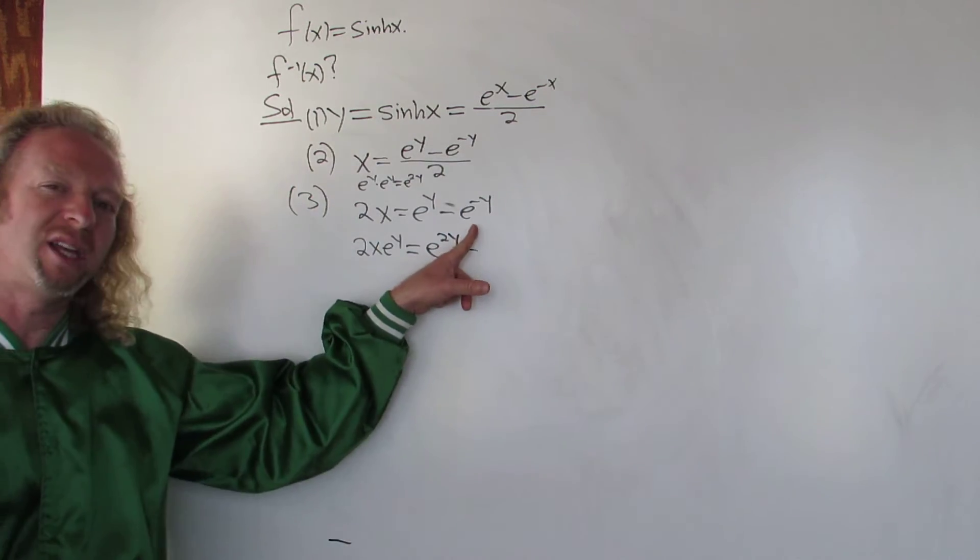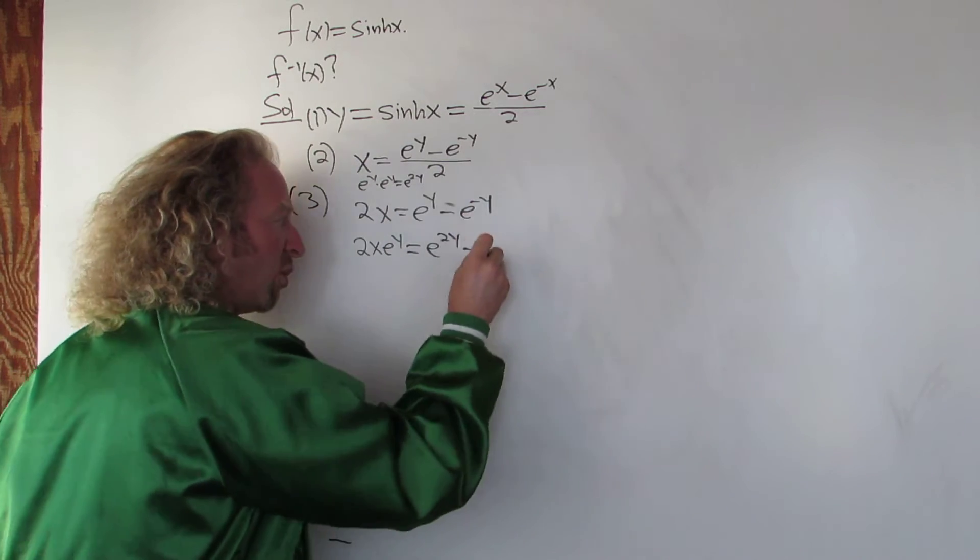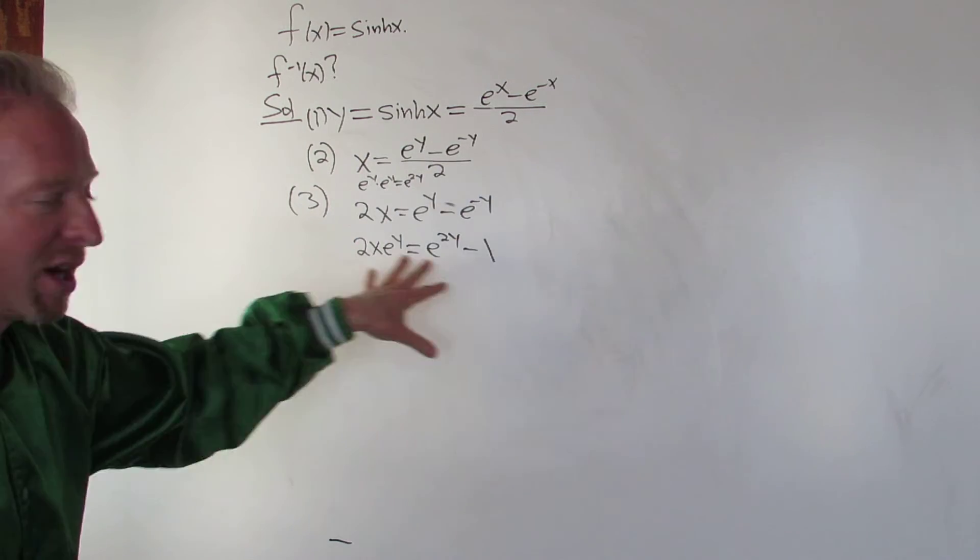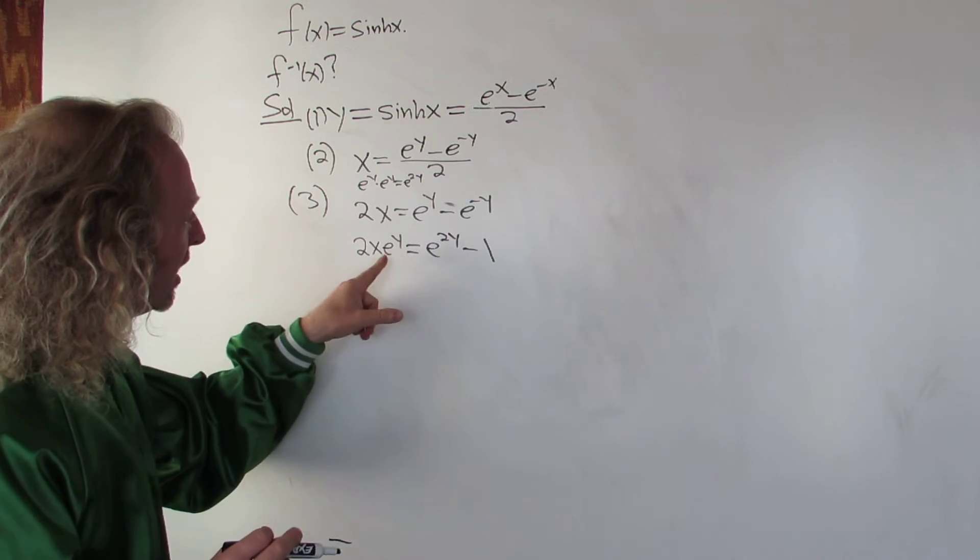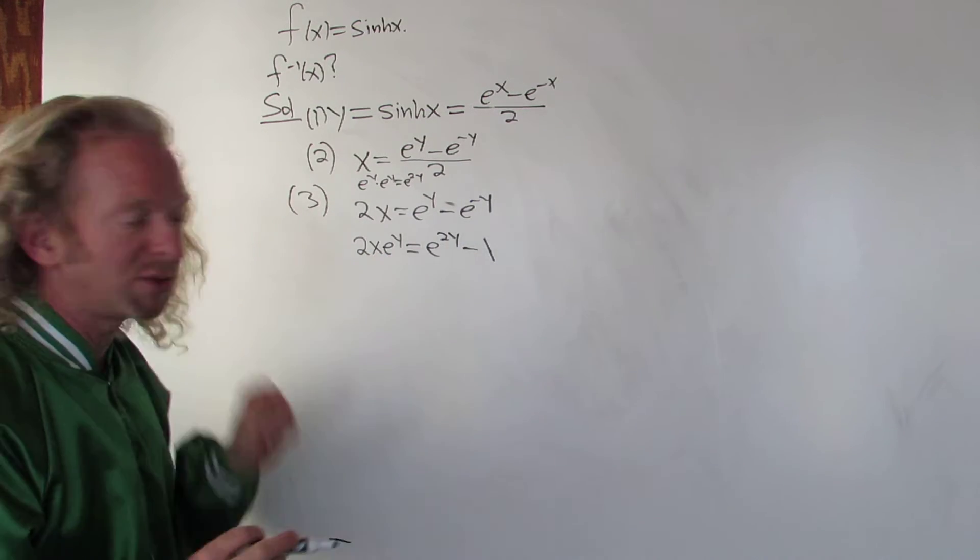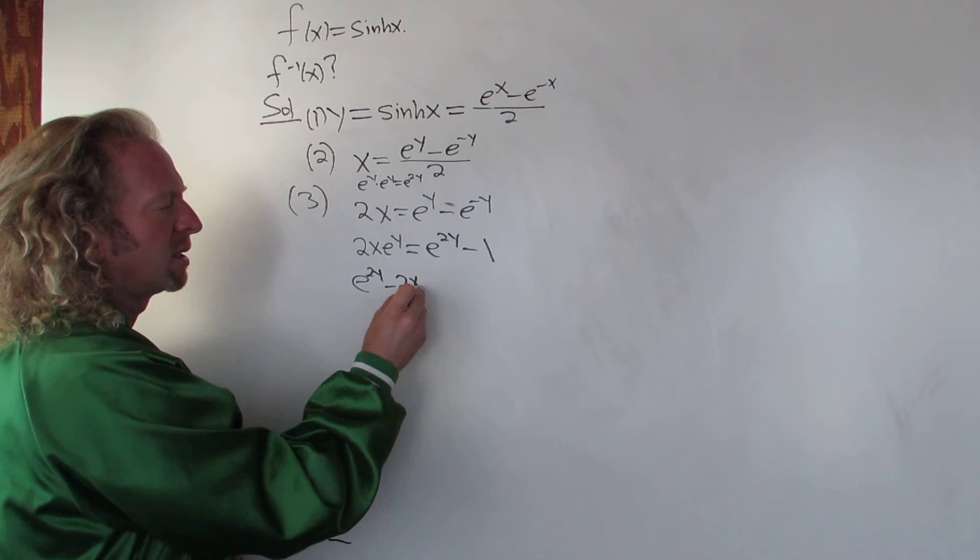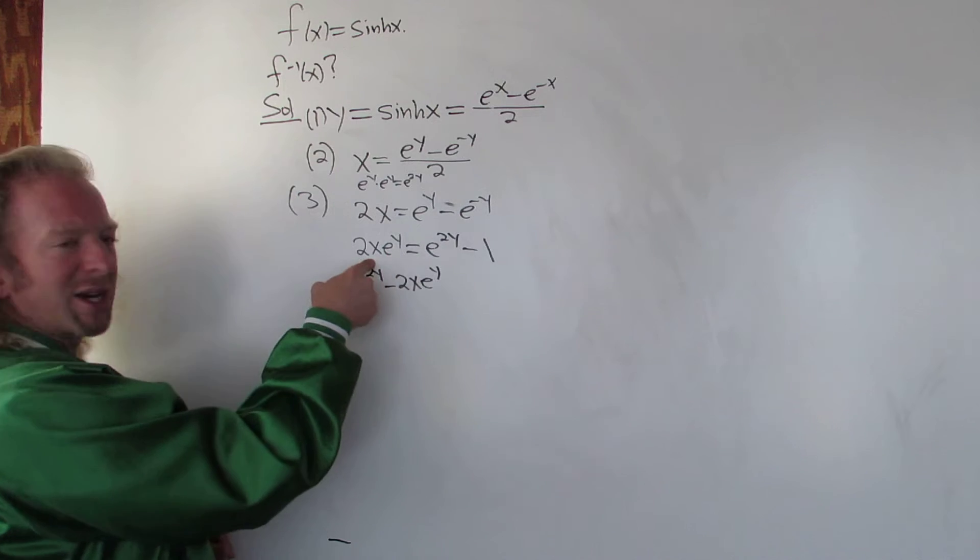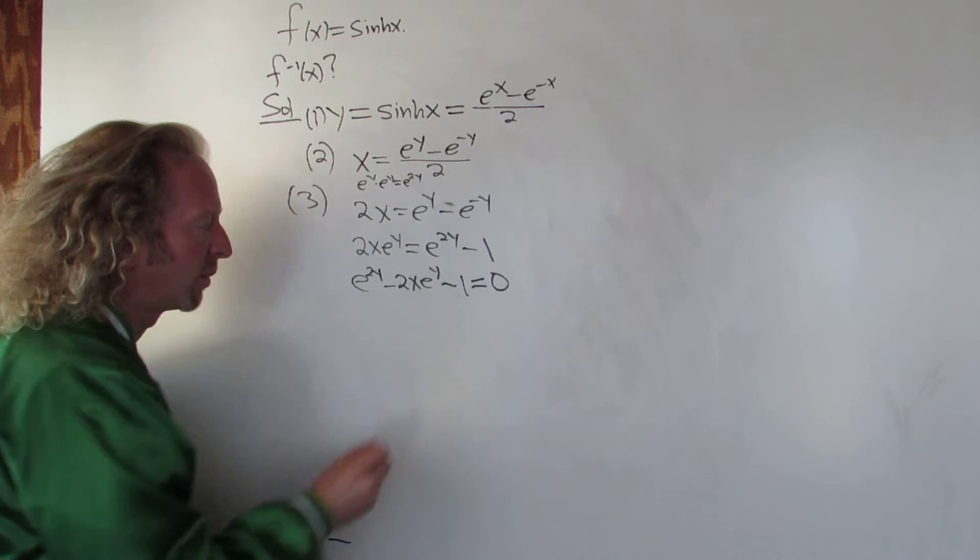Minus, and then when you multiply it here, you're just going to get 1, right? Because y plus negative y is 1. Now we're ending up with what looks to be a quadratic equation in e to the y. Let's go ahead and subtract this and set it equal to 0. So we have e to the 2y minus 2x e to the y, right, subtracting this over here, minus 1 equals 0, okay?